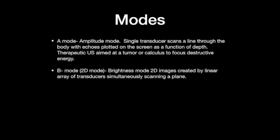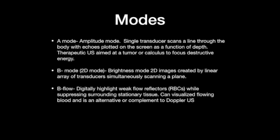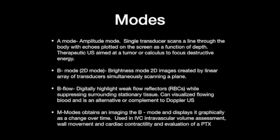B mode is a two-dimensional brightness mode created by a linear array of transducers simultaneously scanning a plane. B flow digitally highlights weak reflectors such as red blood cells while suppressing surrounding stationary tissues — it's useful for visualizing blood flow and is an alternative or complement to Doppler ultrasound. M mode obtains an image from B mode and displays it graphically as a change over time. It's used in intravascular volume assessment of the IVC, wall movement, cardiac contractility, and evaluation of pneumothorax.